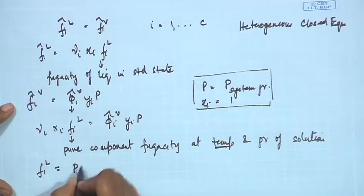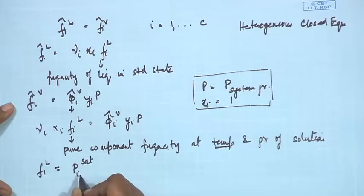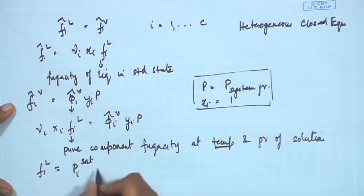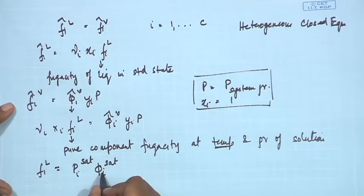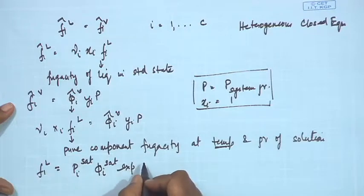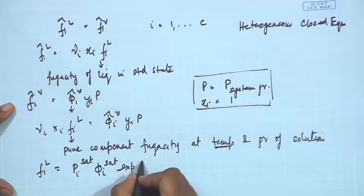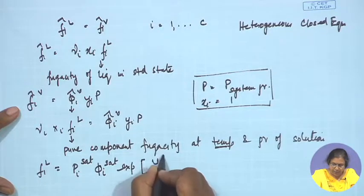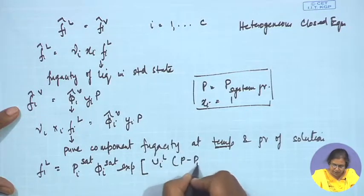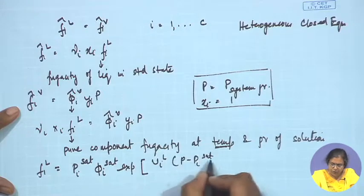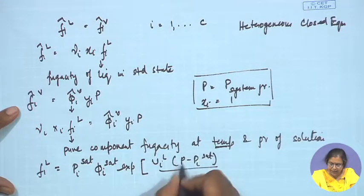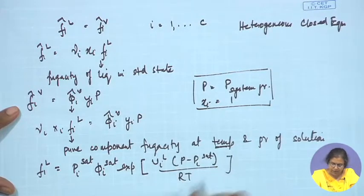The pure component fugacity equals the saturated vapor pressure of the component, corrected by two factors: one for non-ideality in the vapor phase, and the other for compression of the liquid from the saturated pressure to the pressure of interest — this is known as the Poynting correction factor. If P is very close to P_i^sat, this Poynting term disappears.